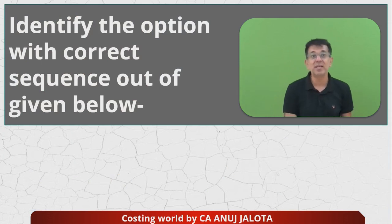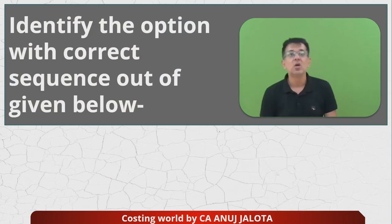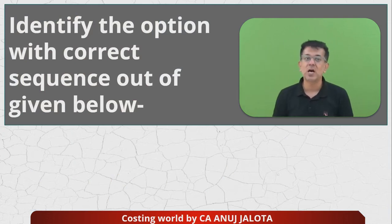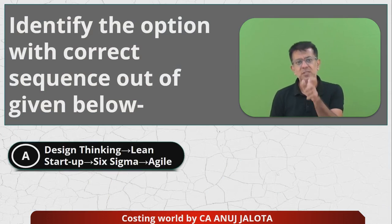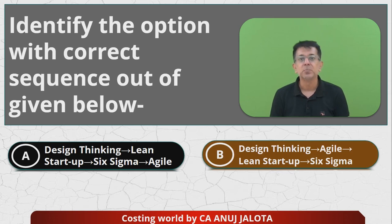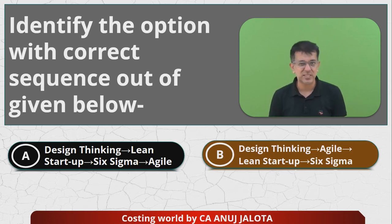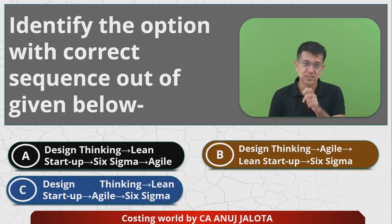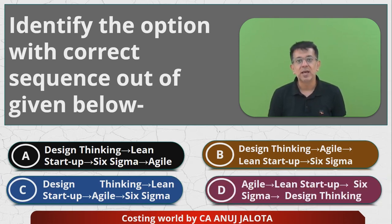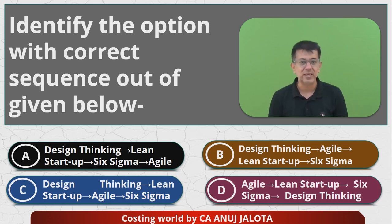Today's question asks: identify the option with the correct sequence from the given options. The four options involve different orderings of: Design Thinking, Lean Startup, Six Sigma, and Agile. I will explain each of the four stages and show how things happen in the correct sequence.